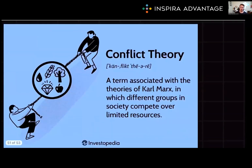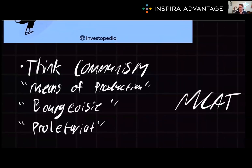Contrasting functionalism, we have conflict theory. This is based on the works of Karl Marx and focuses on how power differentials are created and contribute to maintaining social order. It explains how groups compete for resources to attain power or superiority. An example is the competition between socioeconomic classes, where wealthier individuals may use their resources to maintain status and control over others. Basically, conflict theory is communism. The keywords to look for on the MCAT are bourgeoisie, proletariat, or means of production — if you see one of those, the right answer is likely conflict theory.